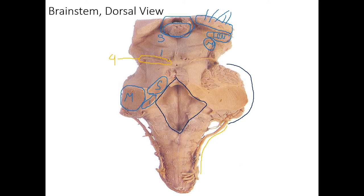The largest bump we see is the facial colliculus from cranial nerve seven — the facial nerve. It contains the facial motor nucleus deep within it. So from this view we call the bump a colliculus, but if we section through we would call the nucleus inside of it the facial nucleus. Continuing inferiorly, this little area here is called the vagal trigone, and below that is the hypoglossal trigone from cranial nerve twelve — that's where those nuclei are located.